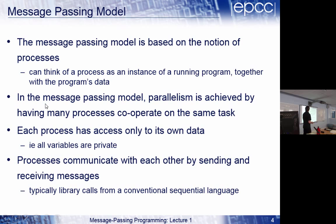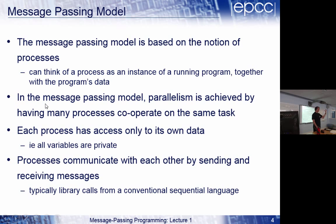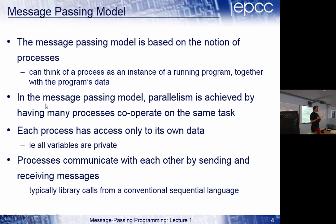The message passing model is based on the notion of processes. When you write a serial program, it becomes a single process — an instance of a program together with its data. In message passing, we're going to launch lots of processes. Your laptop is probably running 50 processes at the moment, looking at email and running Facebook. But what we're going to do is get these processes to cooperate. Message passing parallelism is a way of making multiple processes cooperate on the same task.